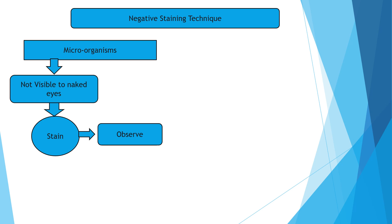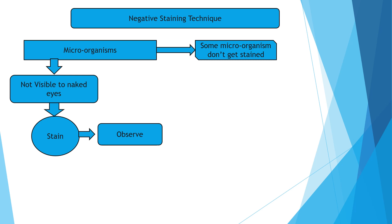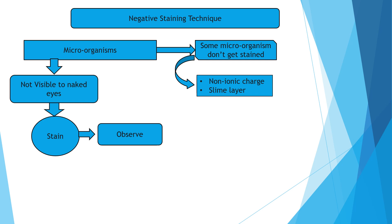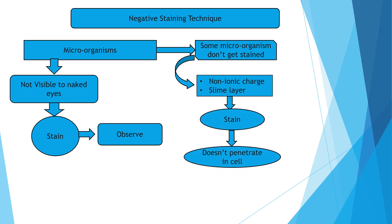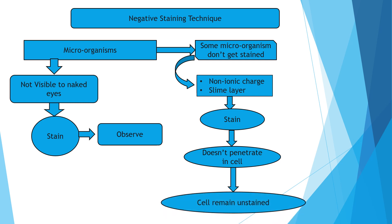In some cases, some microorganisms don't get stained easily. The reasons behind this are that some microorganisms may contain a non-ionic charge on their surface, and they can also contain a slime layer. Because of these two reasons, when we stain the microorganisms, the stain doesn't penetrate the cell, and hence the cell remains unstained.